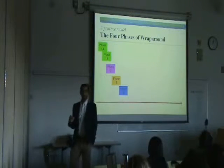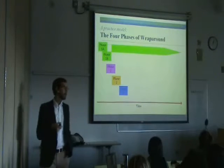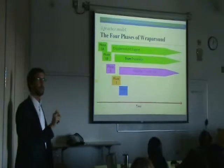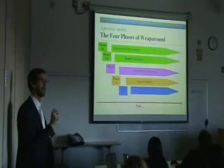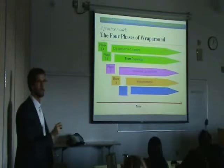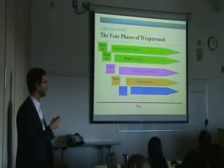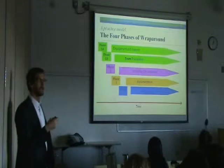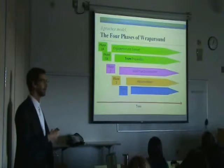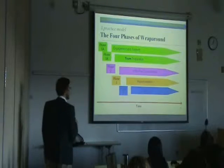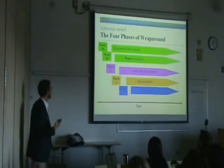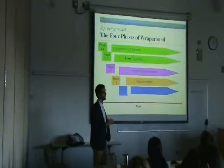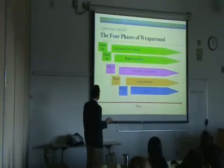Over the last six years or so, we've developed a clearer practice model for what it means to have wraparound facilitators doing this work — making sure they have adequate skills for what is an incredibly difficult job. They need to organize the effort of all these people, including typically strong-willed, opinionated service providers, probation officers, caseworkers, and therapists. They have to engage the family and monitor this plan over time. We need to make sure their caseloads are adequately low and that they're really well trained to do this job.